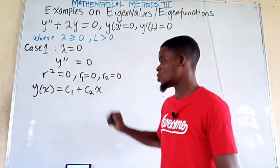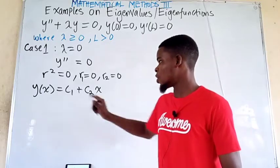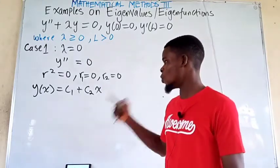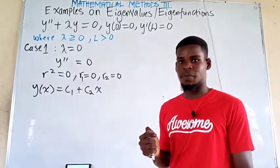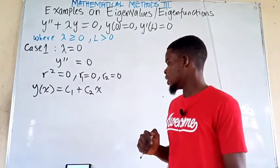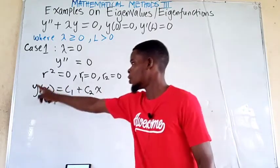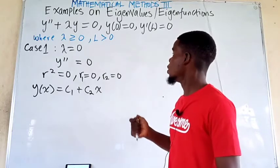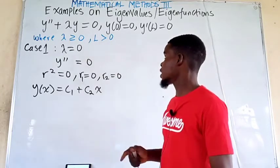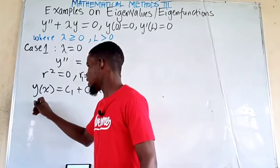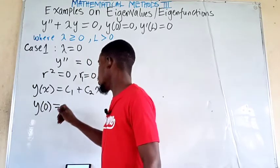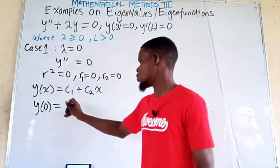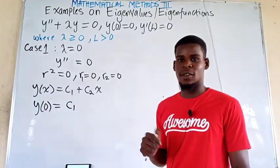For this second-order linear differential equation with a repeated root of 0, this is the assumed solution with arbitrary constants. We now plug in the boundary conditions. For y evaluated at 0 equals 0, we substitute x equals 0 on the right-hand side: cosine of 0 gives 1, so we get c1 equals 0.